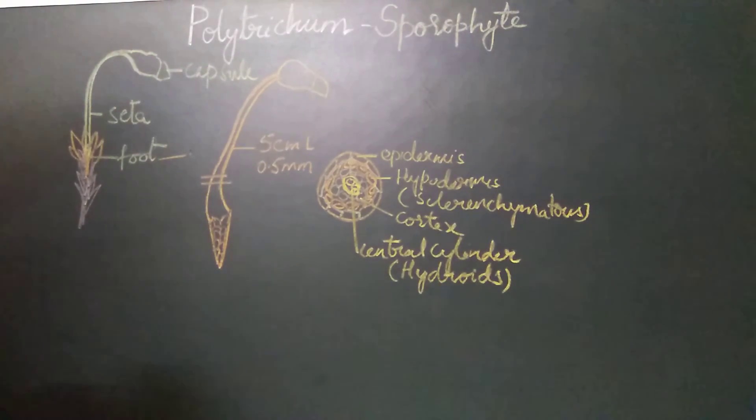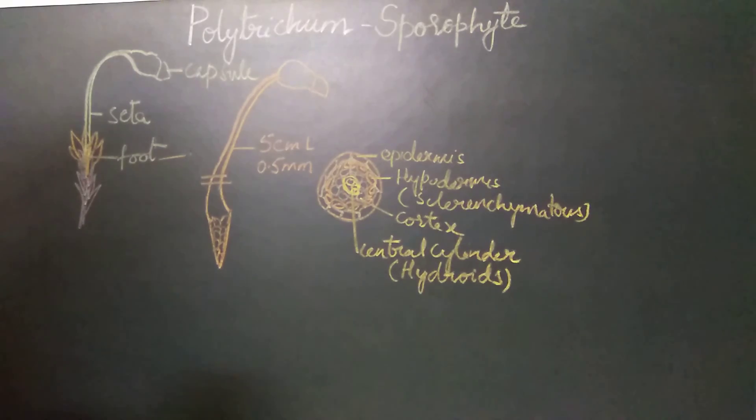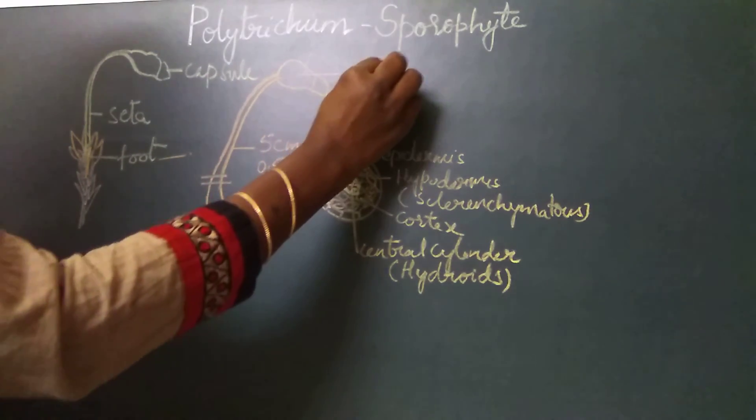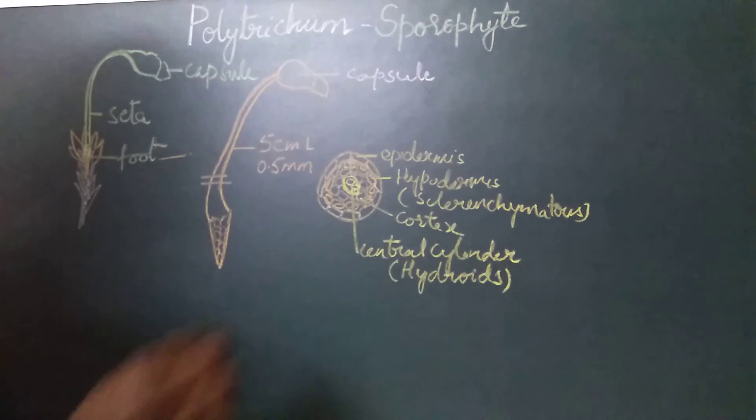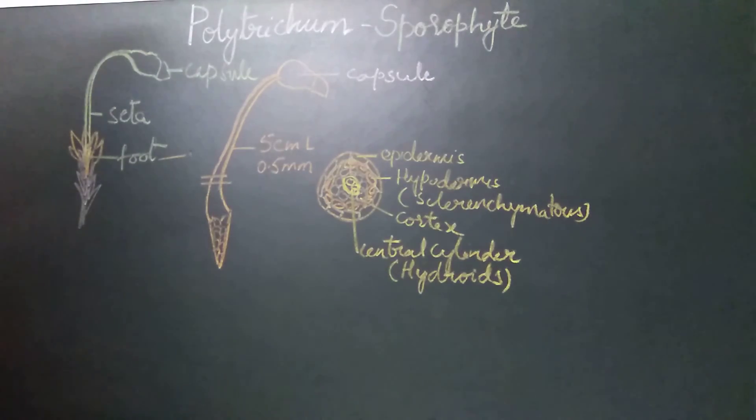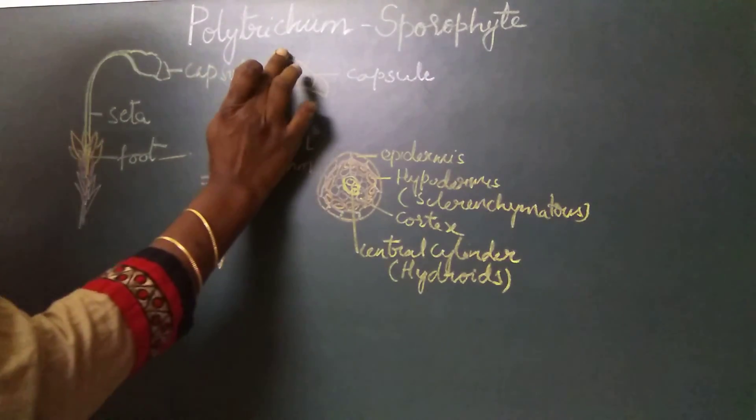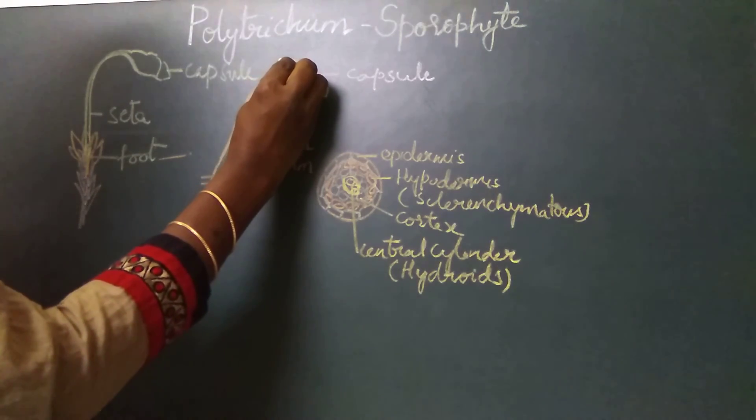Above the seta is the capsule. The capsule of Polytrichum is differentiated into three zones.